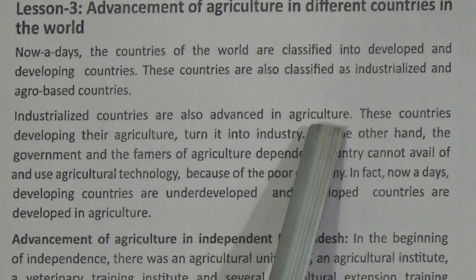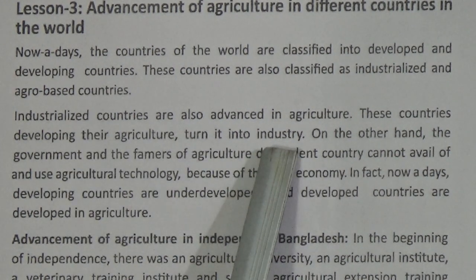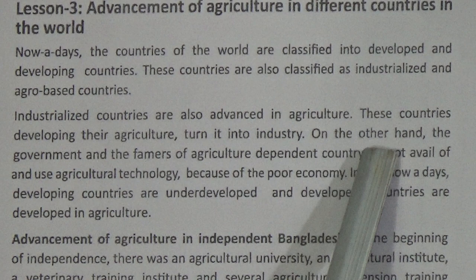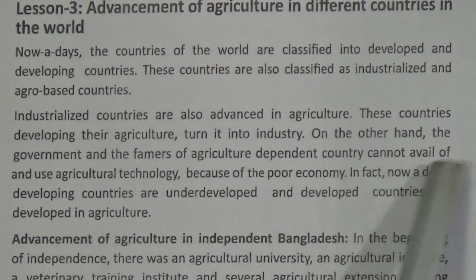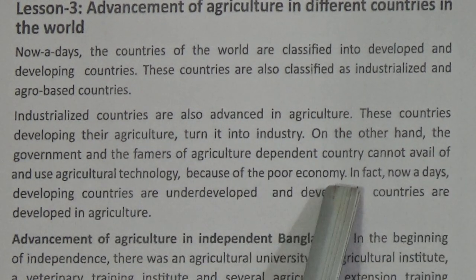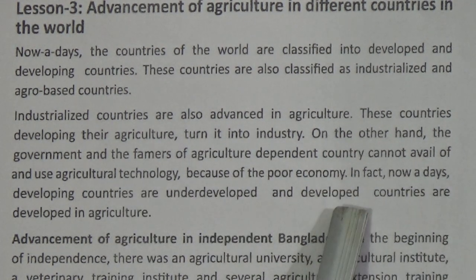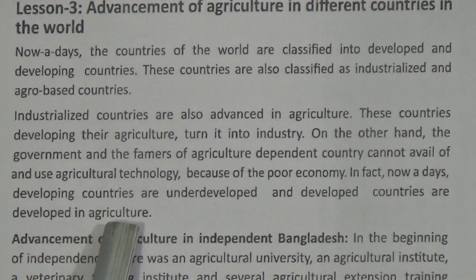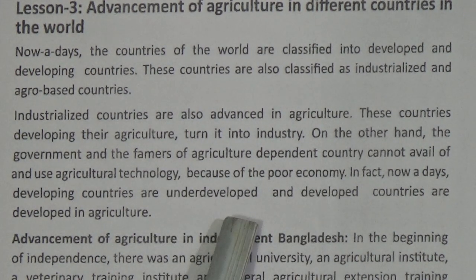Countries are also classified as industrialized and agro-based countries. Industrialized countries are also advanced in agriculture, developing their agriculture turn into industry. On the other hand, the governments and farmers of agriculture-dependent countries cannot avail of modern agricultural technology because of poor economy. So developing countries are underdeveloped in agriculture compared to developed countries.